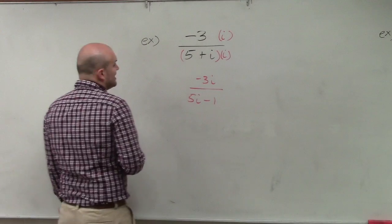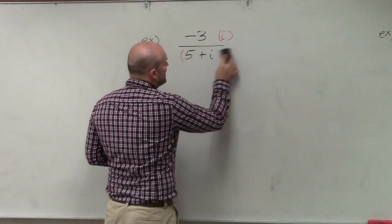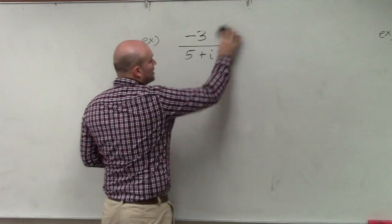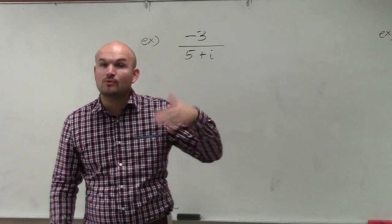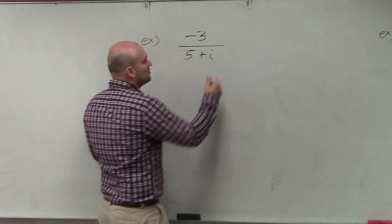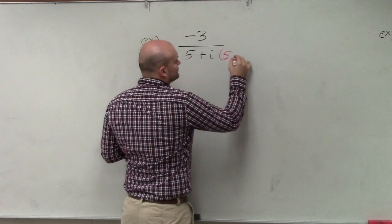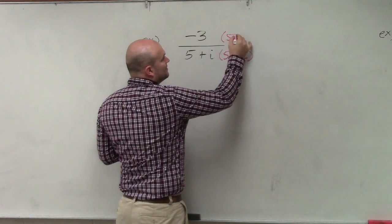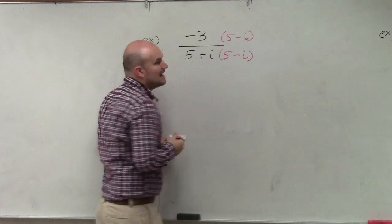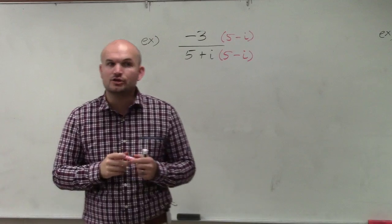So what we need to do is, instead of multiplying by i, when we have a monomial or just our imaginary unit, we just multiply by i. But when we have an expression, we're going to multiply by the conjugate, which is going to be 5 minus i. And again, whatever you multiply in the denominator, you have to multiply in the numerator.